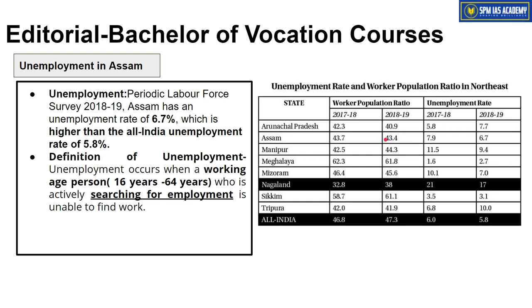Looking at Assam's data specifically, the worker population ratio is 43.4%. In simple terms, among all people in the 16-64 age group, only 43% are either working or looking for work — and of those 43%, 6.7% cannot find employment. So effectively, out of 100 people, only 43 are working, and among those, 6-7 people cannot get a job. This table shows the workers population and labour force participation rate across the entire North East.